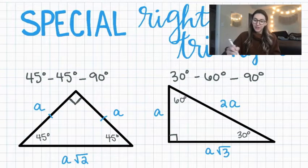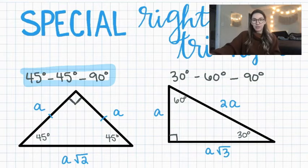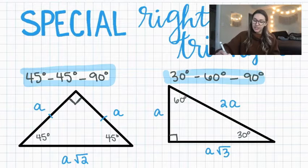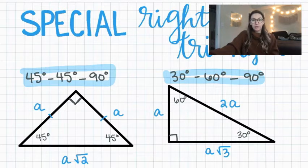There are two different types of special right triangles: a 45-45-90 special right triangle, named for the measures of its angles, and a 30-60-90 special right triangle. Each of these right triangles has specific relationships or ratios between the side lengths.